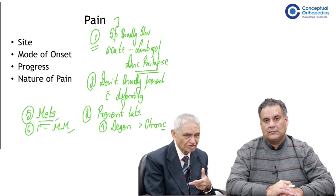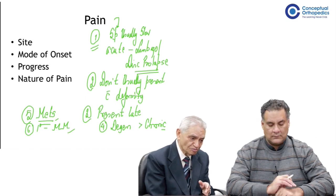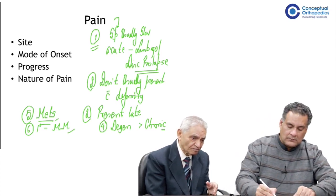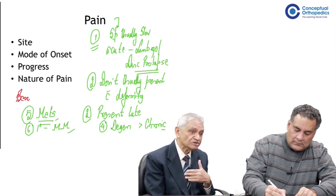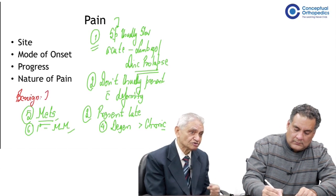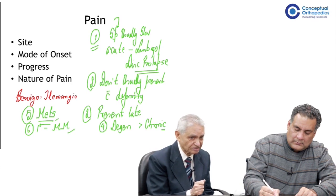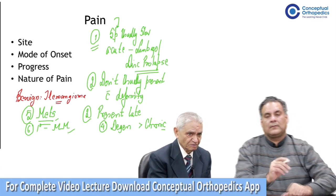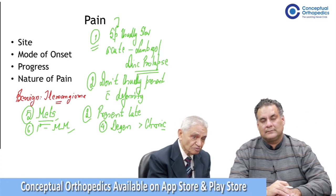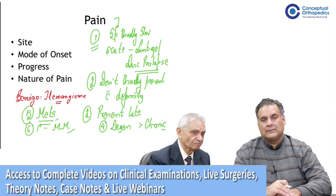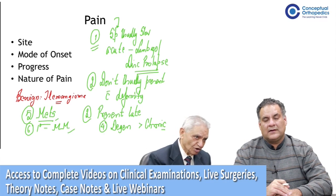The commonest benign tumor of the vertebral column is a hemangioma. Hemangiomas were not visible earlier, but since the arrival of MRI, they are very commonly seen in vertebral bodies. Hemangiomas as a rule don't bother the patient, while myeloma does. So to recap: commonest malignant deposit is metastasis; commonest primary malignant tumor is myeloma; commonest benign tumor is hemangioma.